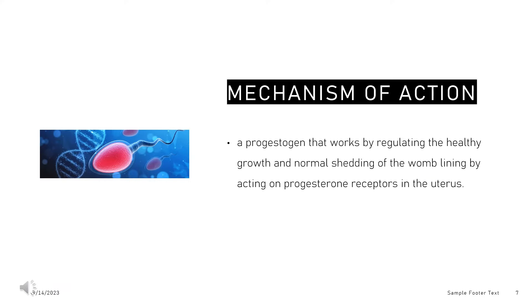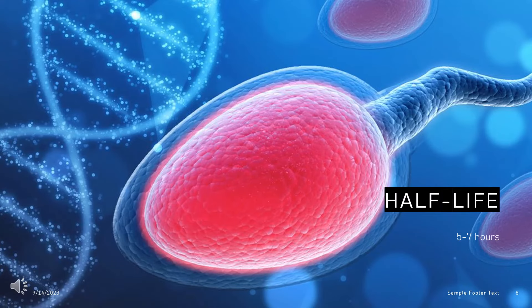Mechanism of Action: Dydrogesterone is a progestogen that works by regulating the healthy growth and normal shedding of the womb lining by acting on progesterone receptors in the uterus. Half-life: Dydrogesterone is 5–7 hours; its metabolite 20-dihydrodydrogesterone (DHD) has a half-life of 14–17 hours.